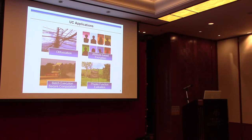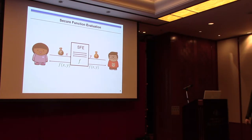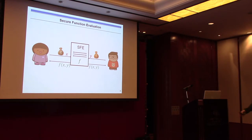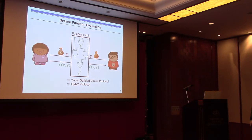The most prominent application is private function evaluation. We are in the secure multi-party computation session, so what is secure two-party computation? We have Alice on one side and Bob on the other, and they would like to know who of them is richer — the famous millionaire's problem. There exist interactive protocols with which they can do this without a trusted third party, and some of these protocols use Boolean circuits.